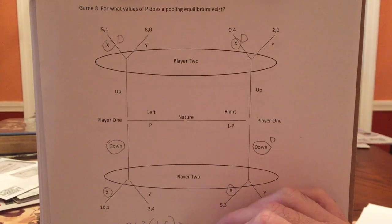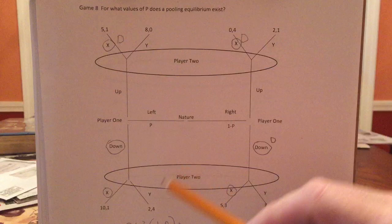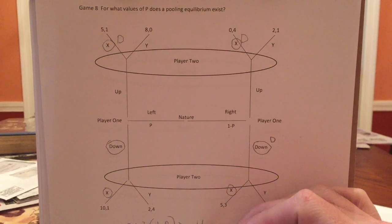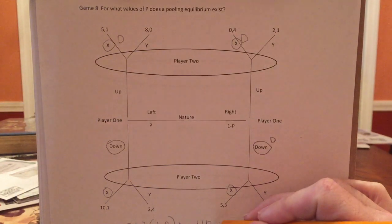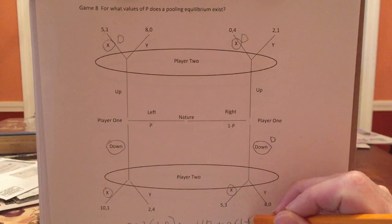And this has to be greater than, well, if you played Y, you would get four with probability P, and you would get zero with probability one minus P.